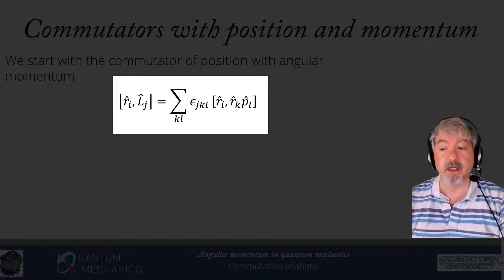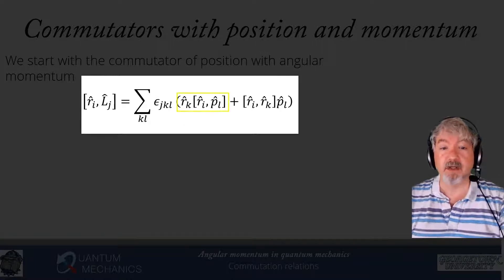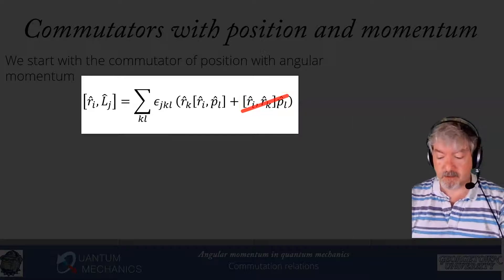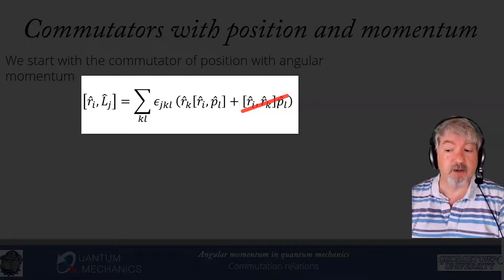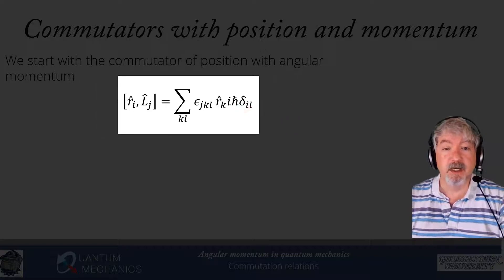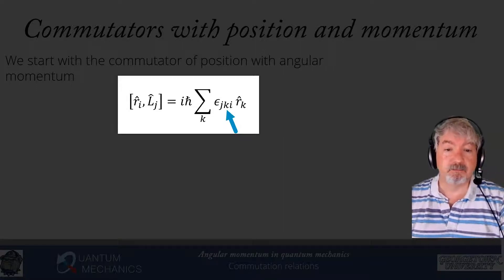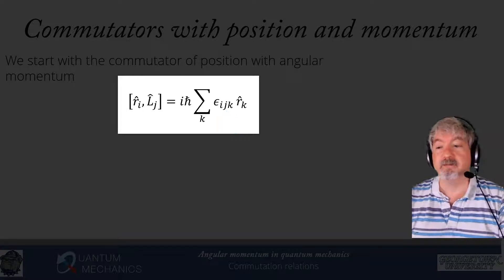We have a product of rk with pl, giving two commutators: rk times the commutator of ri with pl, and the commutator of ri with rk multiplied by pl. The second one is zero because position always commutes with position. The first one I evaluate from the canonical commutation relation, getting iℏ delta_il. The delta_il sets l equal to i, eliminating the sum over l. I then cyclically permute jki to ijk, yielding the commutation relation of position with angular momentum.